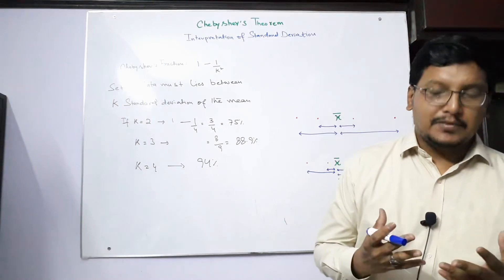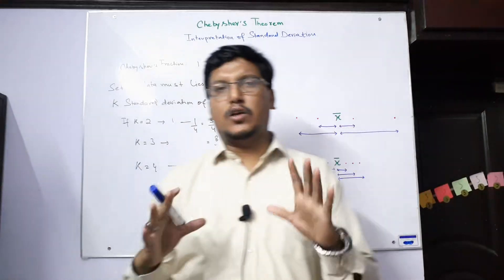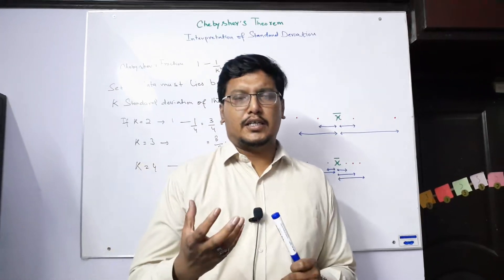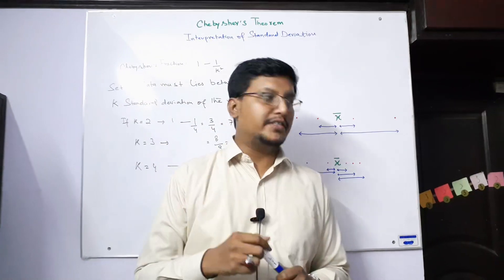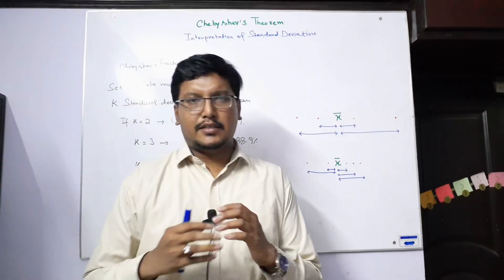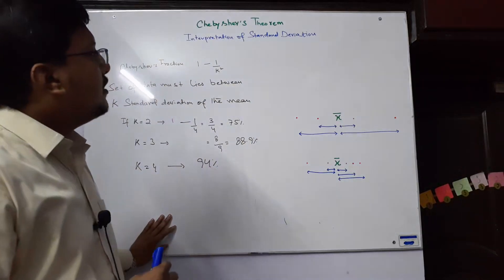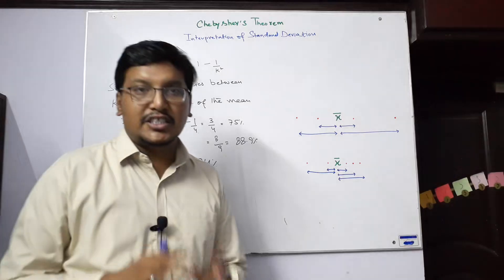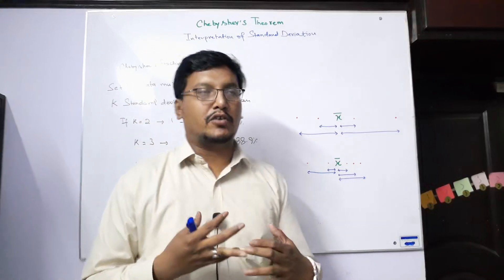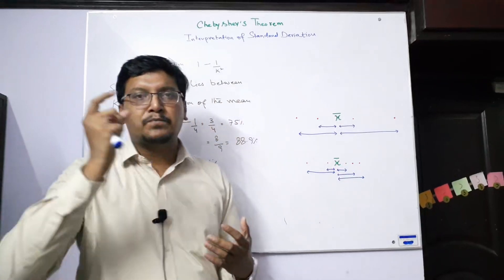Today we are here with one more lecture belonging to the topic of variation. We discussed a lot about measures of dispersion and variation — we learned standard deviation, variance, mean deviation, and range. Today we are discussing these in a different way, specifically the interpretation of standard deviation, for which we have an important theorem: Chebyshev's theorem.